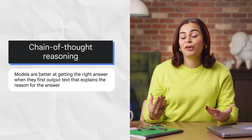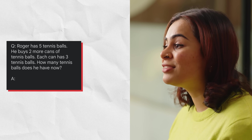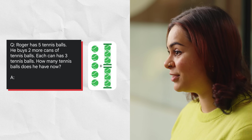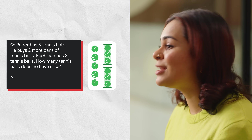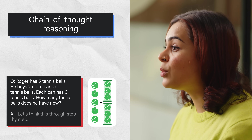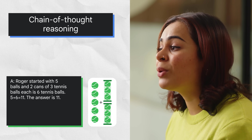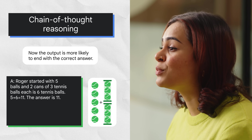Chain of thought reasoning is the observation that models are better at getting the right answer when they first output text that explains the reason for the answer. For example: Roger has five tennis balls, he buys two more cans of tennis balls, each can has three tennis balls — how many tennis balls does he have now? When this question is posed with no prior reasoning, the model is less likely to get the correct answer directly. However, by the time the second question is asked, the output is more likely to end with the correct answer. But there is a catch — a model that can do everything has practical limitations.